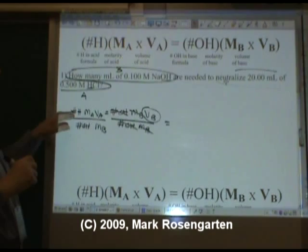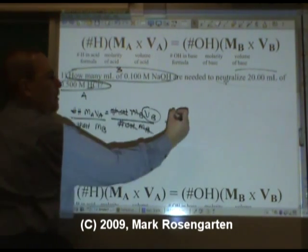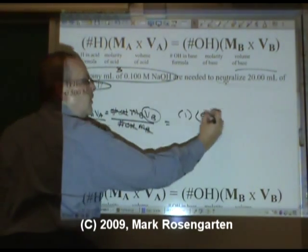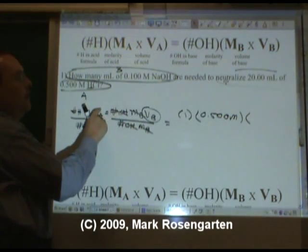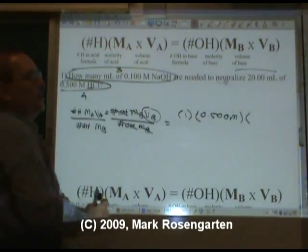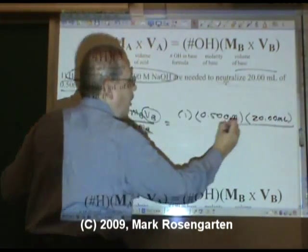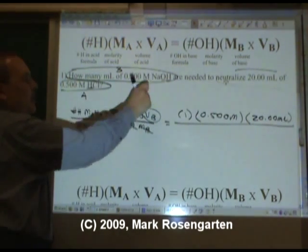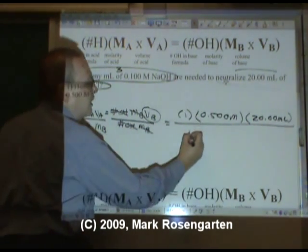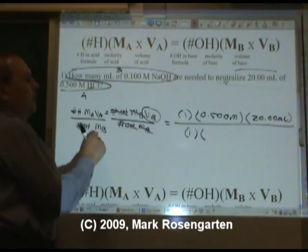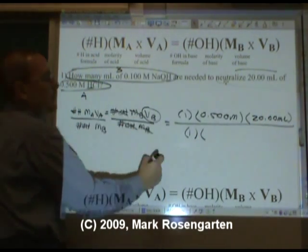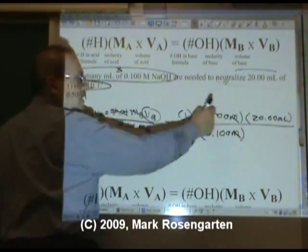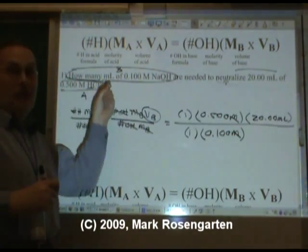How many hydrogens in the formula of the acid HCl? One. What's the molarity of the acid? 0.500. What's the volume of the acid? 20.00 milliliters. Over. How many hydroxides in the formula of sodium hydroxide? That would be one hydroxide. The molarity of the base is 0.100. Check it out. Molarity cancels. It's going to leave us with milliliters, which is what we're trying to find out.